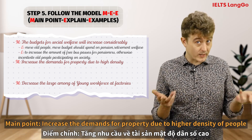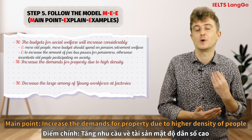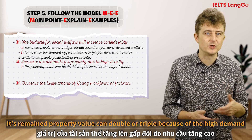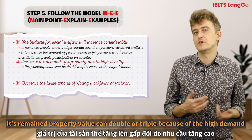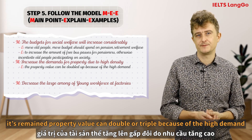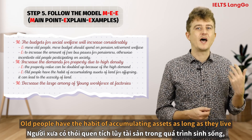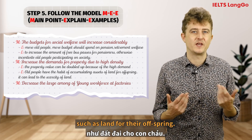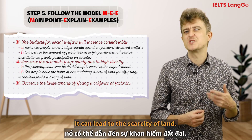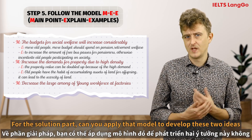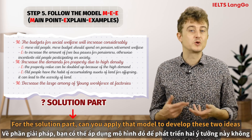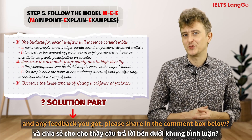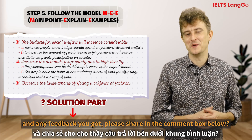Another main point is that this will increase the demand for property due to higher population density, meaning property values could double or even triple. Old people have the habit of accumulating assets — such as land for their offspring — and this can lead to a scarcity of land. For the solution part, you can apply the MEE model to develop those two ideas. Any feedback you have, please share in the comments below.